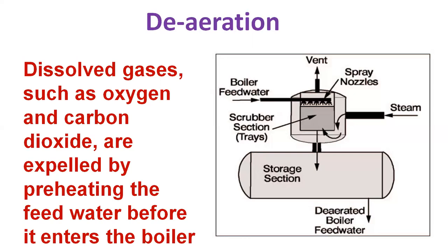Carbonic acid corrodes metal, reducing the life of equipment and piping. It also dissolves iron, which when returned to the boiler precipitates and causes scaling on the boiler tubes. This scale not only contributes to reducing the life of the equipment but also increases the amount of energy needed to achieve heat transfer. Deaeration can be done by mechanical deaeration, by chemical deaeration, or by both together.